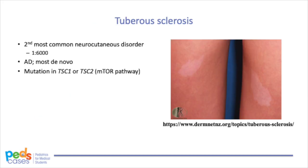The second most common neurocutaneous disorder is tuberous sclerosis, with an incidence of 1 in 6,000. It is an autosomal dominant disorder caused by mutations in either TSC1 or TSC2, both encoding tumor suppressors involving the mTOR signaling pathway. Like NF, most cases of tuberous sclerosis occur de novo. Both NF and TS affect multiple organ systems, particularly the skin and nervous system.